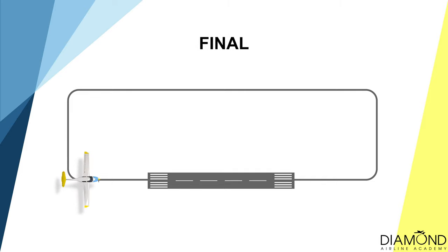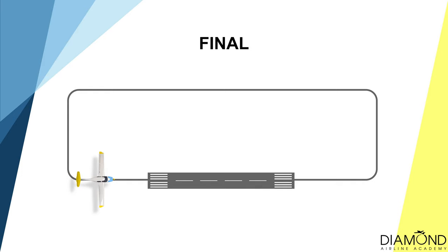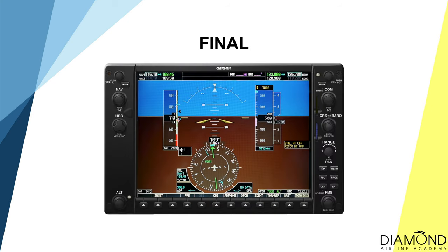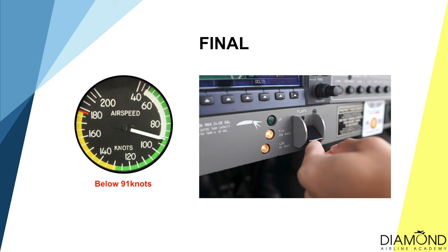After aligning the aircraft with the runway centre line, this indicates the start of the final leg, which allows us to descend below 500 feet. If the aircraft is not established on final, descending below 500 feet is prohibited. When the aircraft is at early final, check the speed is below 91 knots and lower the final stage of flap — the landing flaps.